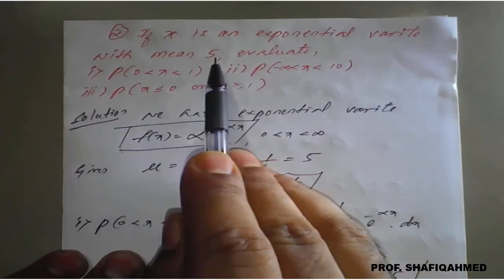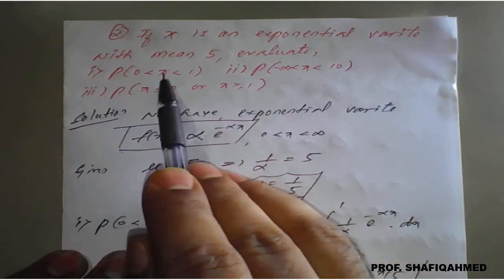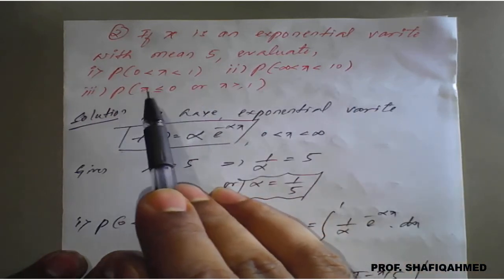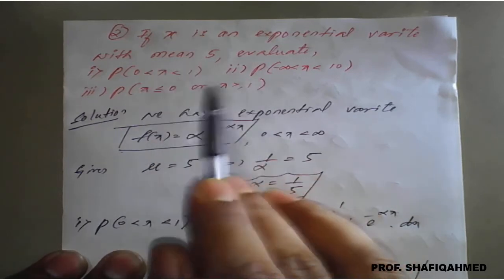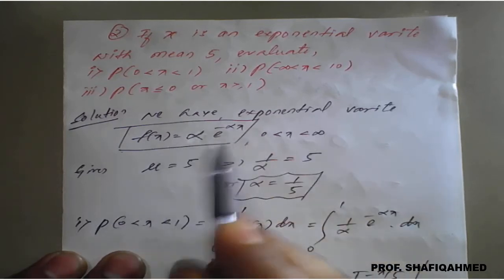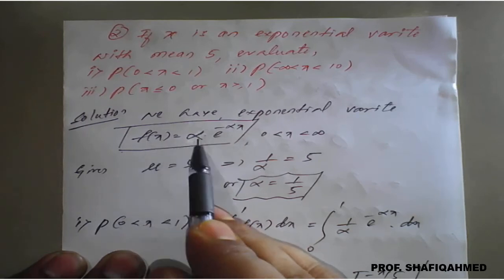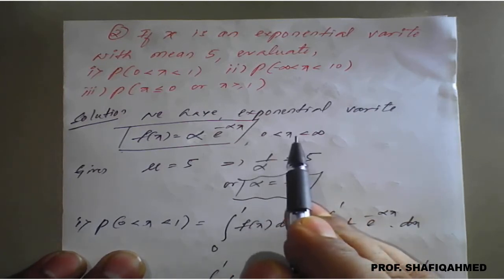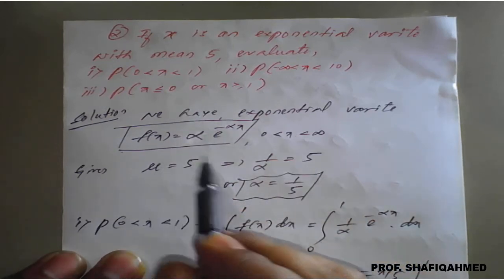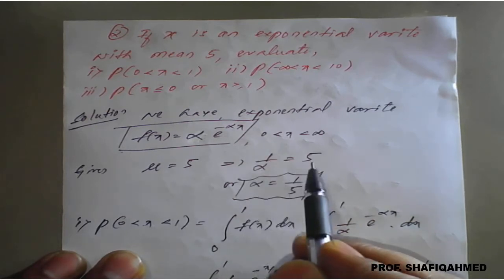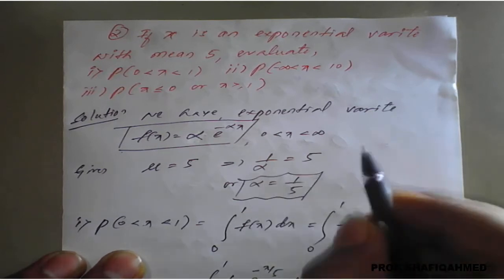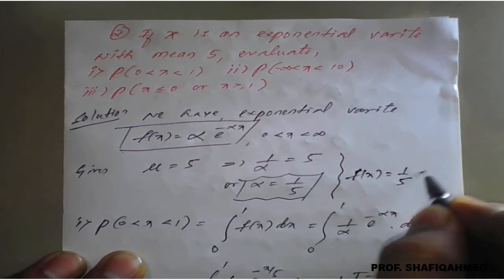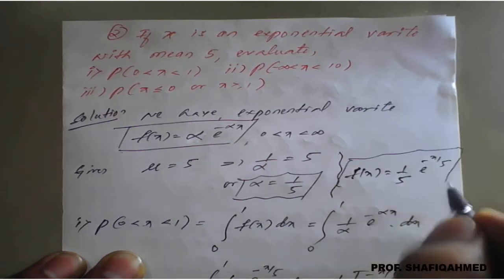X is an exponential variate with mean phi. We need to evaluate: P(0 < X < 1), P(-∞ < X < 10), and P(X ≤ 0 or X ≥ 1). The exponential distribution PDF is f(x) = α·e^(-αx) for x > 0. Since the mean is given as phi, and mean = 1/α, we have α = 1/φ. So f(x) = (1/φ)·e^(-x/φ). You can use this directly or substitute into the question.